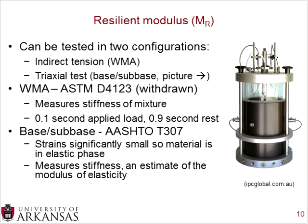One of the performance tests of particular interest was the resilient modulus. You can test the resilient modulus in two ways: in an indirect tension setup often used for warm mix asphalt, or in a triaxial test for bases and sub-bases. For warm mix asphalt, you have a circular sample and push down on the top and bottom, creating indirect tension in the middle. Following ASTM D4123, you apply a one-tenth of a second load and let it rest for nine-tenths of a second over multiple cycles to get a measure of stiffness.